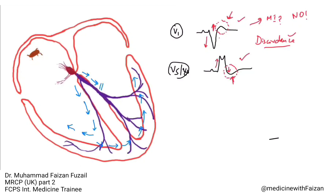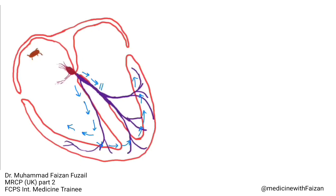Now, here is a caveat. Even patients with bundle branch blocks, left ventricular hypertrophy, or pacemakers can also suffer from myocardial infarction. So, considering this discordance phenomenon, how will we know the patient is actually suffering from an MI? That's where the Sgarbossa criteria play a role. But before learning about this criteria, let's first discuss the phenomenon of concordance, which is the opposite of discordance.